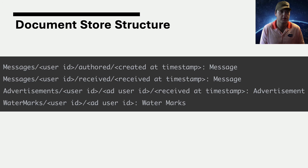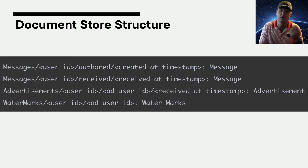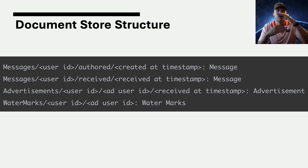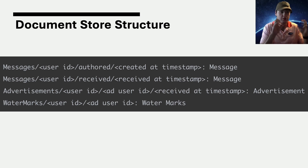Watermarks allow user 1 to track the last authored and received message timestamp they've seen from user 2. So next time user 1 sees user 2, they can say: I saw this message timestamp last time, give me all messages after this up to the most recent. We retrieve only that window of messages the advertising user has that the scanning user has not yet seen, then update the watermark to reflect the transmission of those messages.